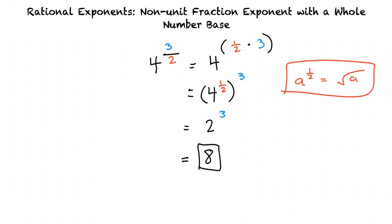So, we could look at 4 to the 3 halves power, and see that the 3 in the numerator is a raised exponent of 3, and the 2 in the denominator is a square root. We can take the 4, and either raise it to the 3rd power, and then take the square root of that, or we can find the square root of 4 first, and then raise that to the 3rd power. Starting with the root is usually the simplest way, but either way works.